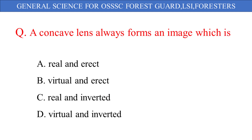A concave lens always forms an image which is: A. Real and erect, B. Virtual and erect, C. Real and inverted, D. Virtual and inverted. And the correct answer is option B: Virtual and erect.